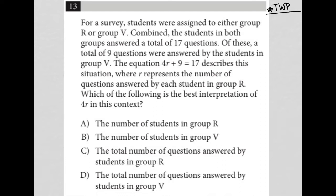So, the question says, for a survey, students were assigned to either group R or group V. So, I'm going to write down R and V, right, are two groups.